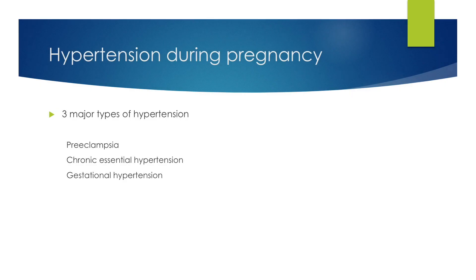There are three major types of hypertension in pregnancy: preeclampsia, chronic essential hypertension, and gestational hypertension. We will approach these three in that order.